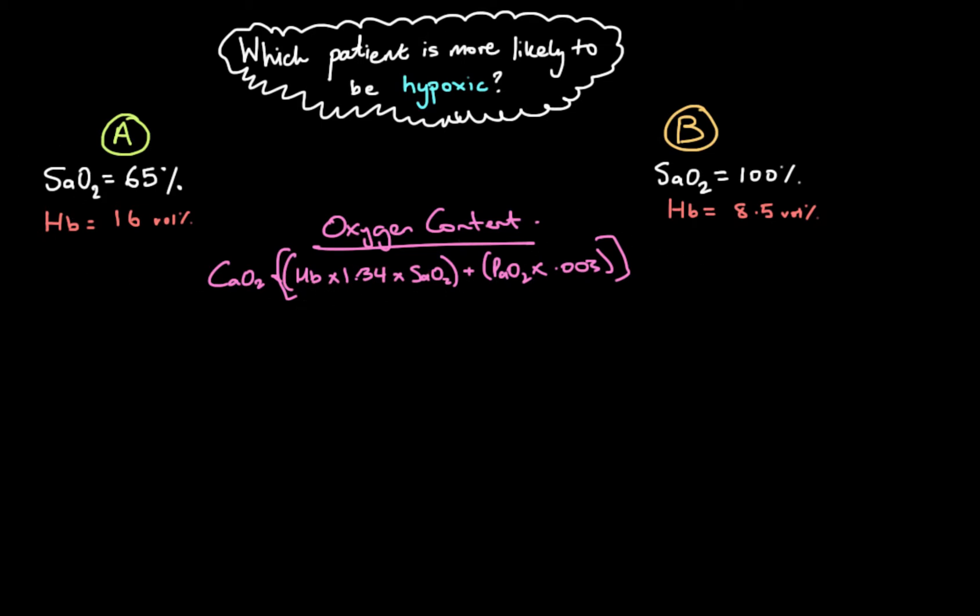So let's have a look at patient A over here. We're going to do our hemoglobin which is 16 and then we're going to times that by 1.34, how many mils of oxygen that 16 grams of hemoglobin can carry at capacity, and then we're going to times that by how saturated the hemoglobin is 0.65. If you plug that into your calculator you're going to get 13.936 for your oxygen content.